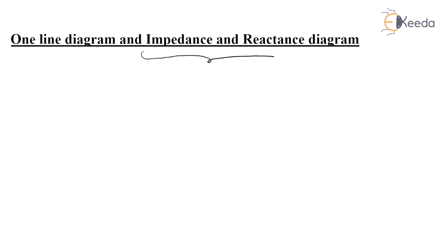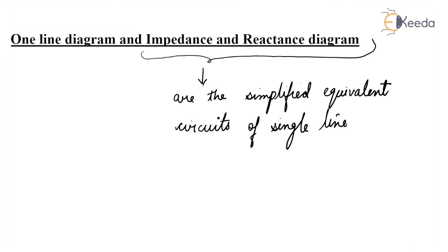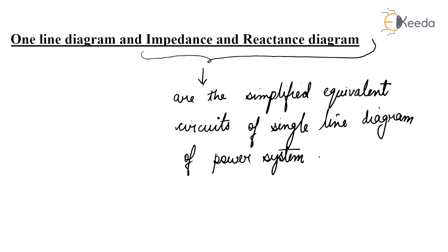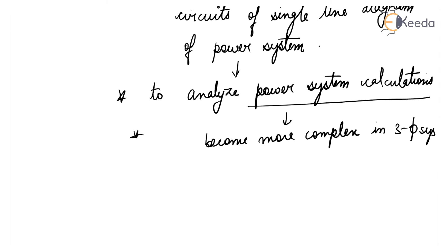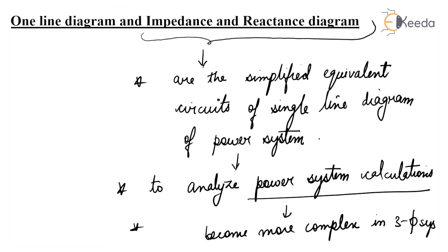Impedance and reactance diagrams are the simplified equivalent circuits of single line, or one line, diagrams of a power system. To analyze power flow and complex power system calculations, real power system calculations become more complex in three-phase system analysis, especially for unbalanced and unsymmetrical systems. In such cases, the system is represented with a single line diagram, and then an equivalent simplified impedance and reactance diagram is drawn to analyze and calculate — this is the easier approach.